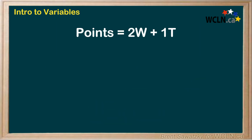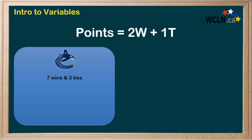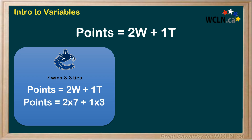So you sent out your formula to all the teams and they're able to use it. The Vancouver Canucks, at this point in the year, have seven wins and three ties. For them, W equals seven and T equals three. Plugging those into your equation, they'll get the total points: two times W, which is seven, plus one times T, which is three. So 14 plus three equals 17 points.